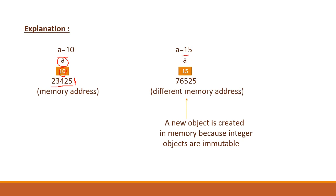When you assigned value 15 to a, integer objects are immutable, so what happened is that a new object with value 15 was created with a new memory address 76525.